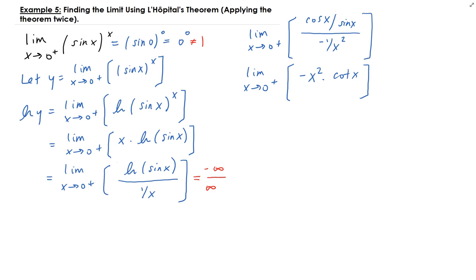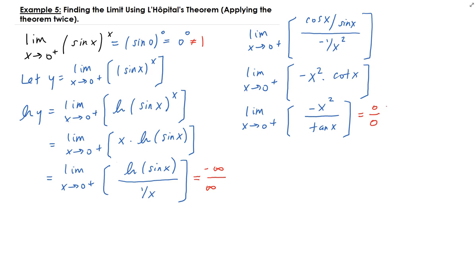To apply L'Hôpital's rule again, we need this in fractional form. Since cotangent x equals 1 over tangent x, we can rewrite this as minus x squared over tangent x. Doing a direct substitution: the numerator gives 0, and tangent 0 is also 0 — so we get the indeterminate form 0/0 again. That means we need to reapply L'Hôpital's theorem.